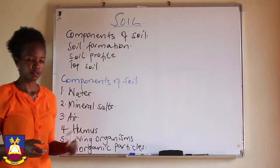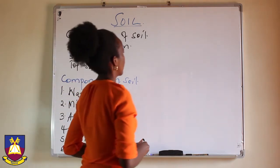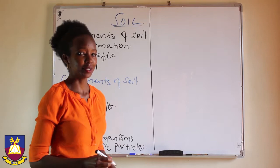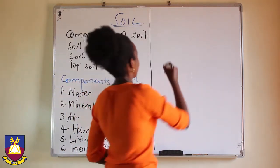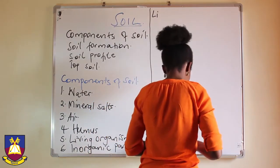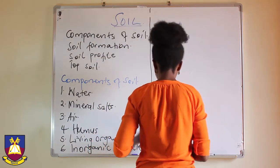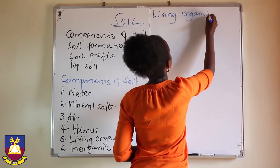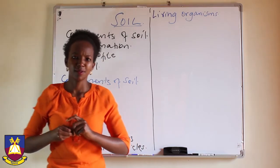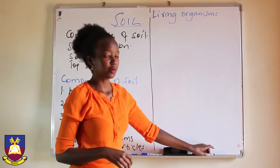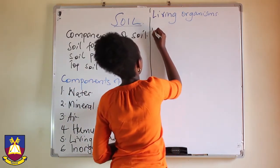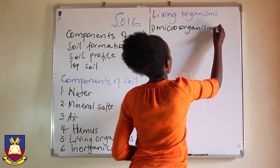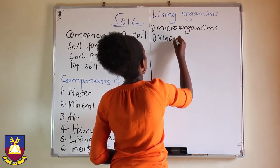Let's start to look at them one by one, starting with living organisms. Soil is made up of living organisms — those are the things that have life. We can categorize them in two ways: the first being microorganisms, and the other ones being macroorganisms.